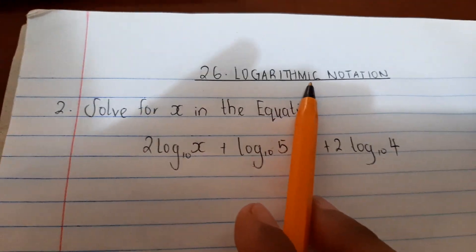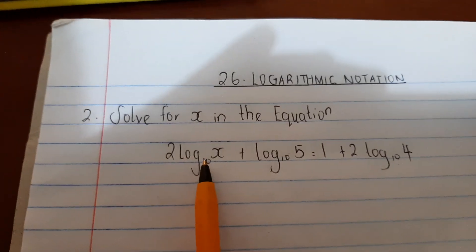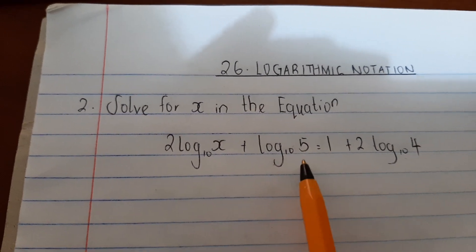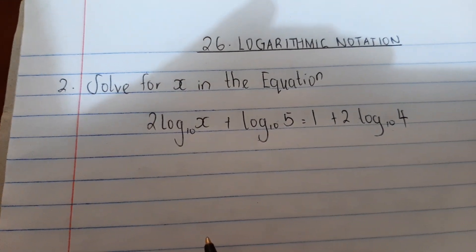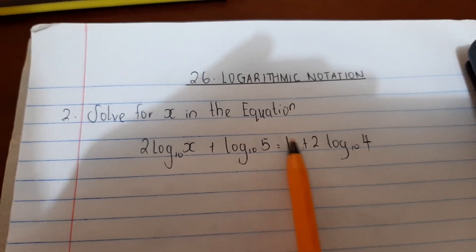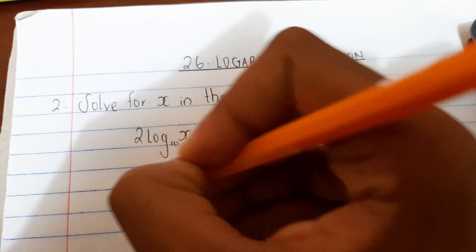Topic 26 logarithmic notation. Solve for x in the equation: 2 log base 10 x plus log base 10 5 equals 1 plus 2 log base 10 4. First, we'll set this up. We know that log base 10 to power x equals 1.